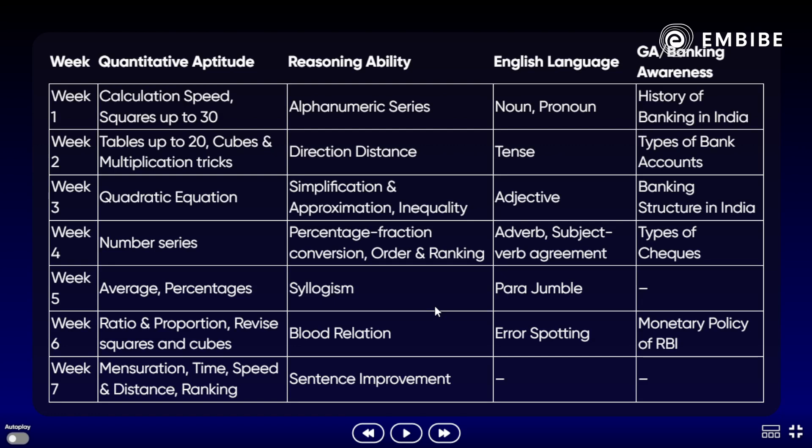पहले मैं बता देता हूँ: Week 1 में आप calculation speed improve करें, squares कम से कम 30 तक याद करें। अगर आपको लगता है कि 30 तक एक-दो दिन में कर लिए, तो अपनी efficiency के according बढ़ा सकते हो। Reasoning में Alphanumeric Series, English में Noun और Pronoun, और Banking में History of Banks से शुरुआत करें।